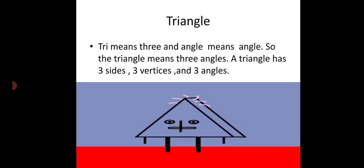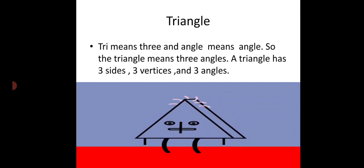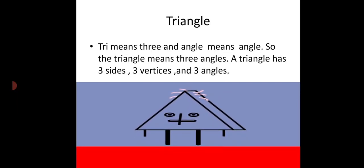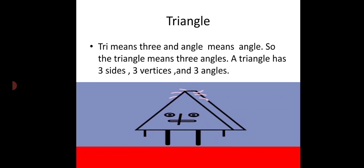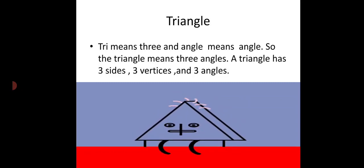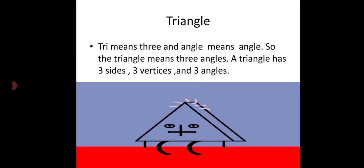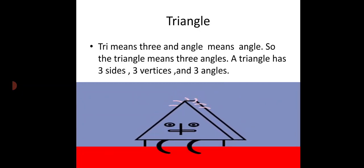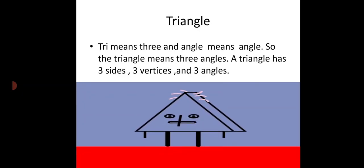Triangle میں ہر چیز three ہوتی ہے. Tri کا مطلب ہے three and angles. Triangle means three angles — a three-sided shape. اس میں three sides ہوتی ہیں، three vertices ہوتی ہیں، and three angles ہوتی ہیں.